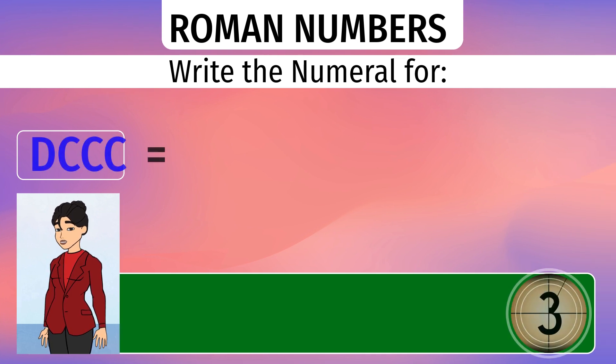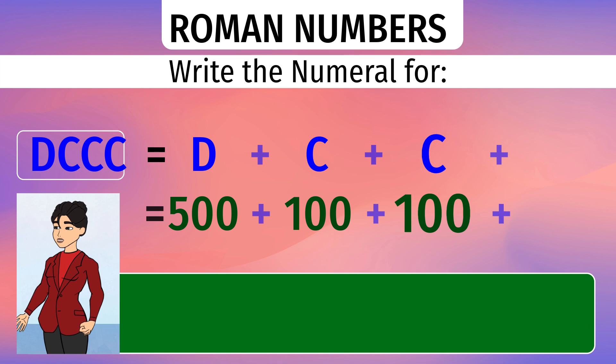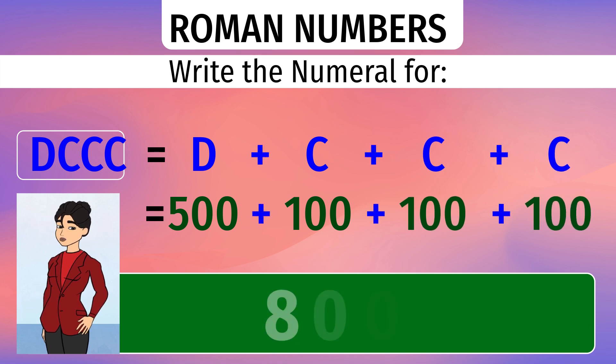What number does DCCC represent? D stands for 500. CCC is 300. They get added. We get 800.